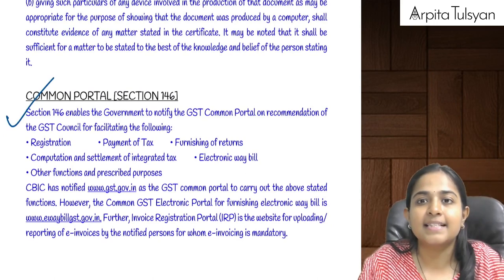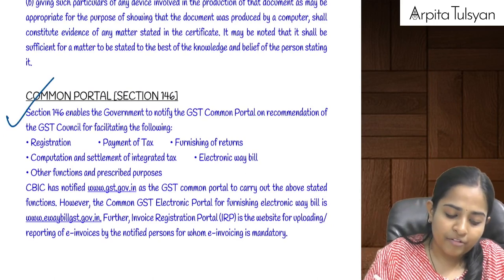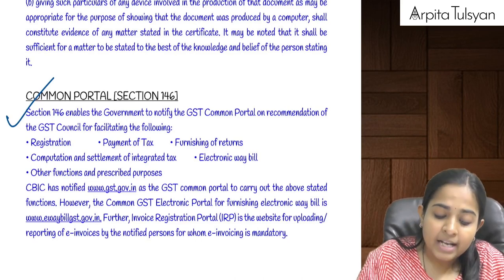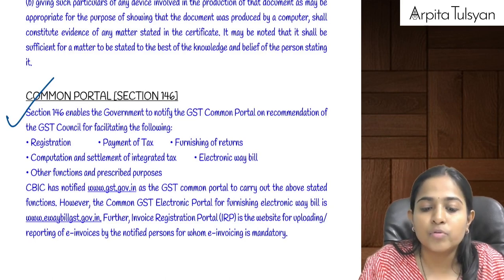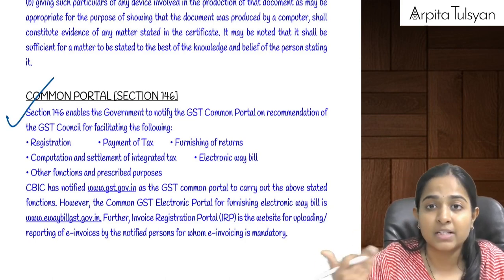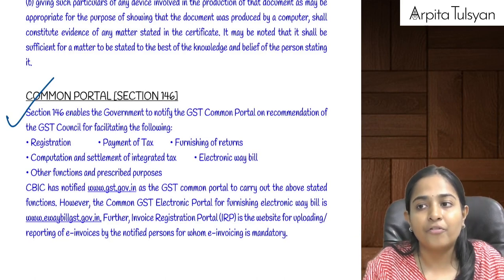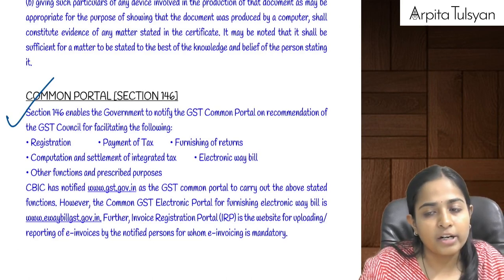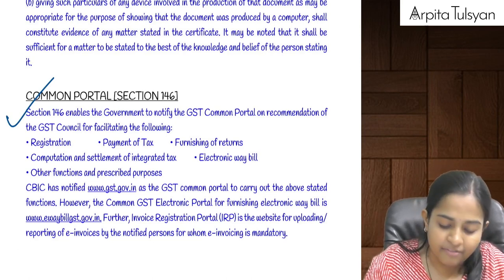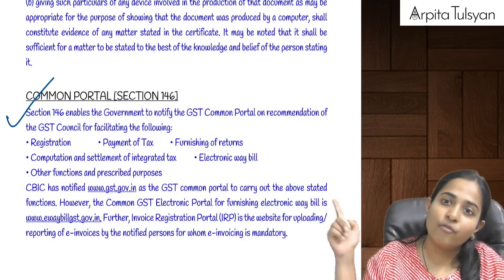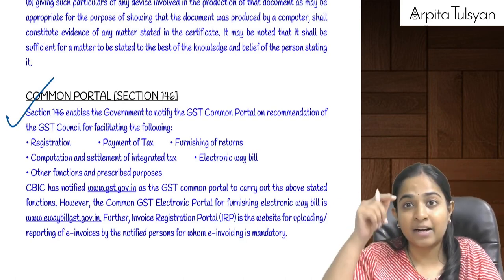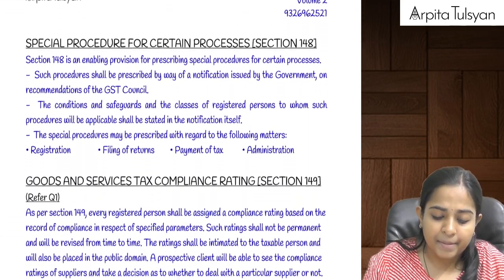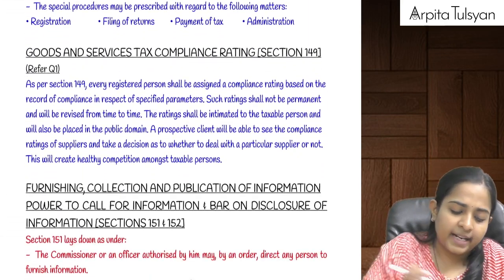Section 146 is about the common portal. The central government has the power to notify the GST common portal on the recommendation of the GST Council, which will be used for various functions like taking registration, filing of returns, payment of taxes, and such other matters. For e-waybill, a different portal exists — waybill.gst.gov.in — and for invoice registration, a separate website is also present.